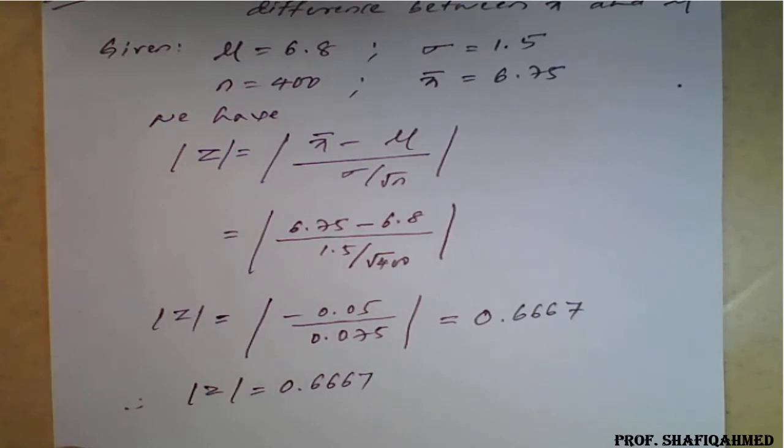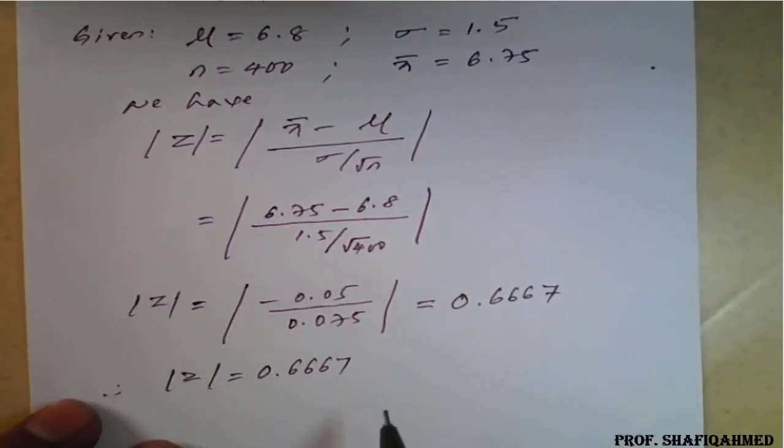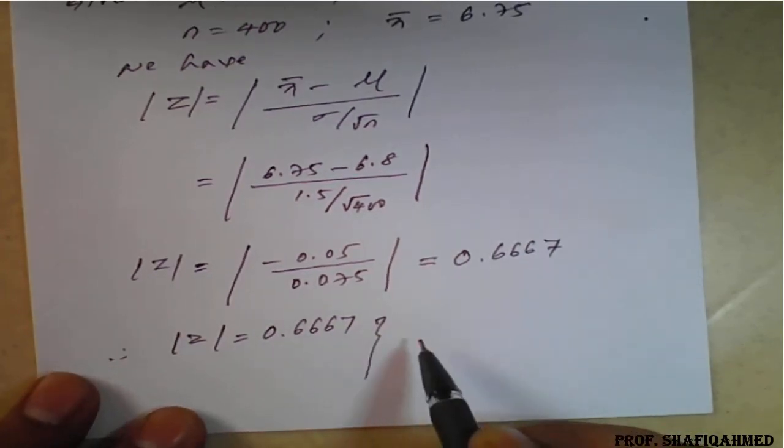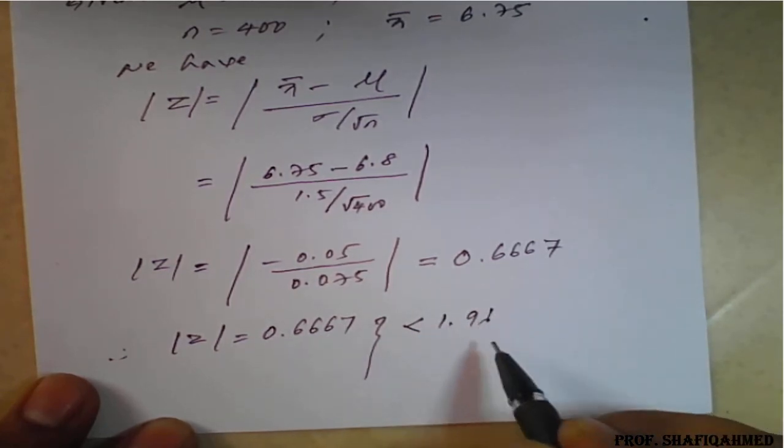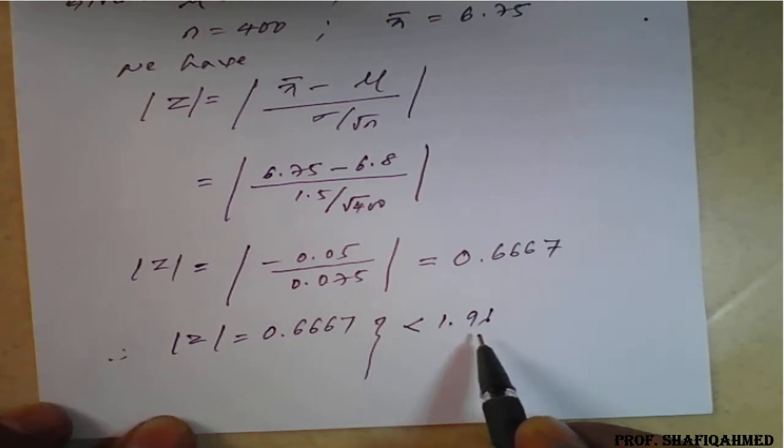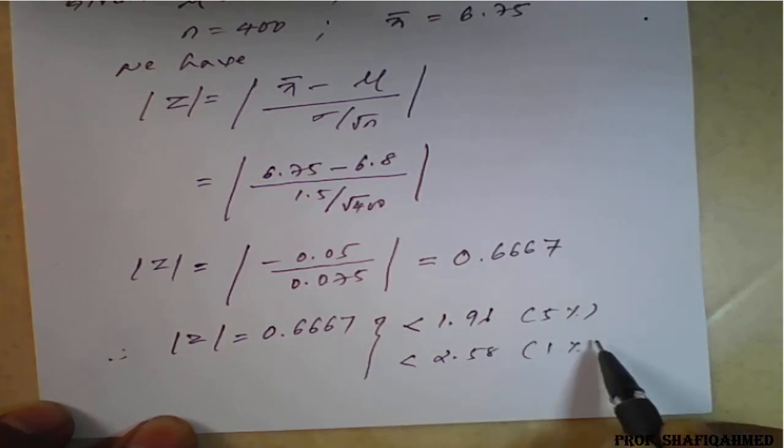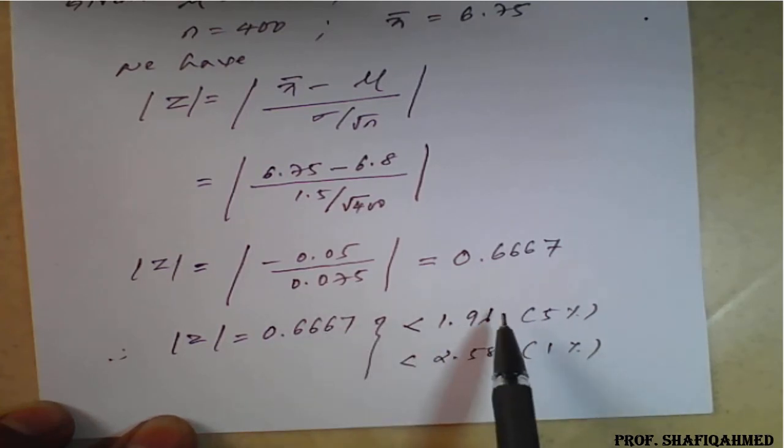Now, in the question there is no such instruction to test for 5% or 1%, so we will test for both. As we know that this value, 0.6667, is less than 1.96, which belongs to 5%, and also less than 2.58, which is 1%. In both 5% and 1%, it is accepted because it's a lesser value. If the value is coming greater than any of this, at that time it is rejected.